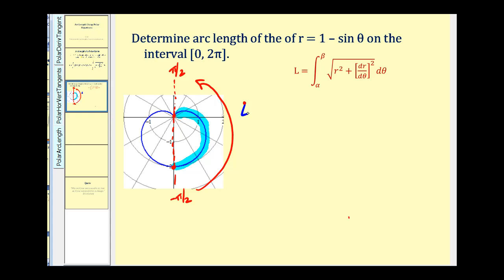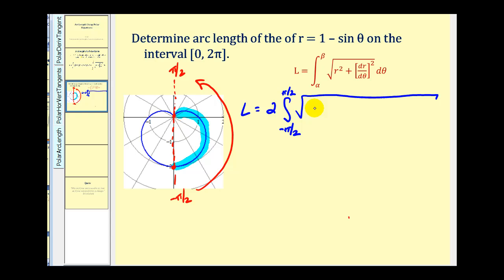So this arc length is going to equal two — because we're doubling it — times the definite integral from −π/2 to π/2 of the square root of r squared, which is (1 − sin θ)², plus (dr/dθ)². The derivative of r with respect to θ is −cos θ. We square that, and integrate all of this with respect to θ.